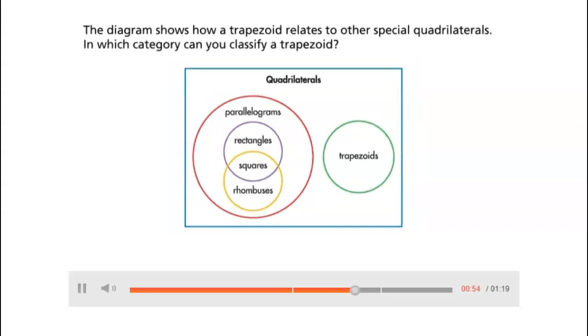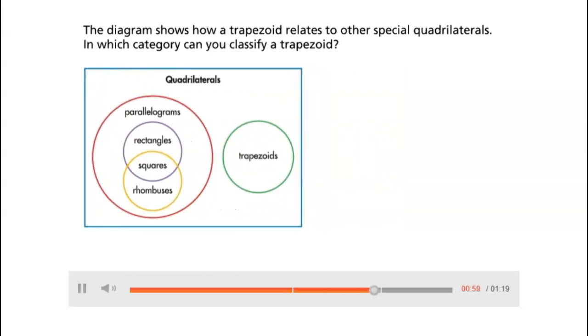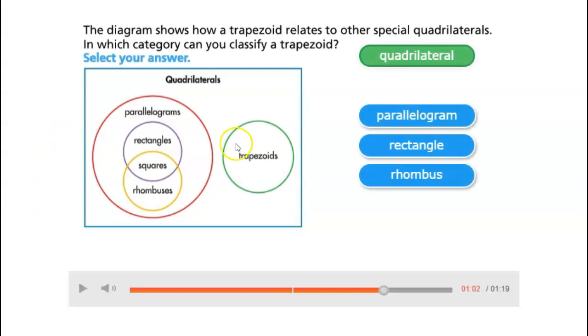The diagram shows how a trapezoid relates to other special quadrilaterals. In which category can you classify a trapezoid? Select your answer.